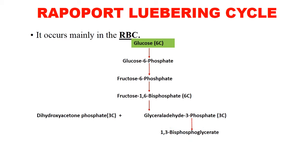Glyceraldehyde 3-phosphate is converted to 1,3-bisphosphoglycerate, which is then converted to 3-phosphoglycerate. The conversion of 1,3-bisphosphoglycerate to 3-phosphoglycerate is a classical example of substrate level phosphorylation.